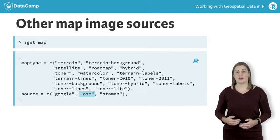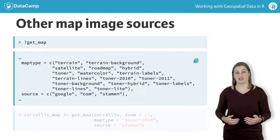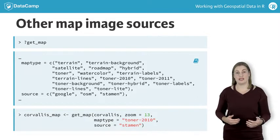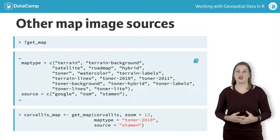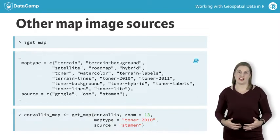As an example, we could instead ask for the toner 2010 type from StamenMaps. You'll play with these variants in the following exercises.